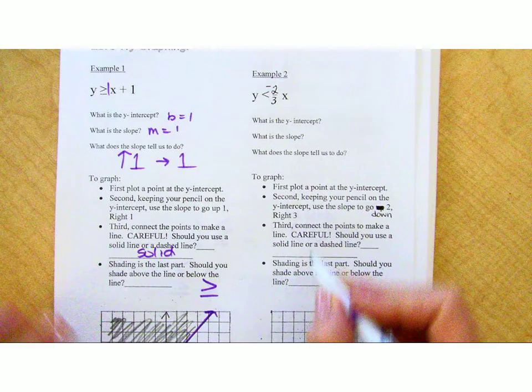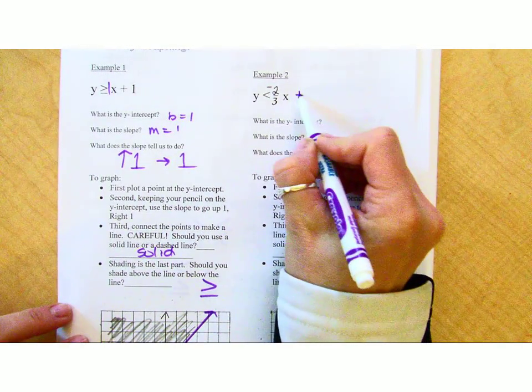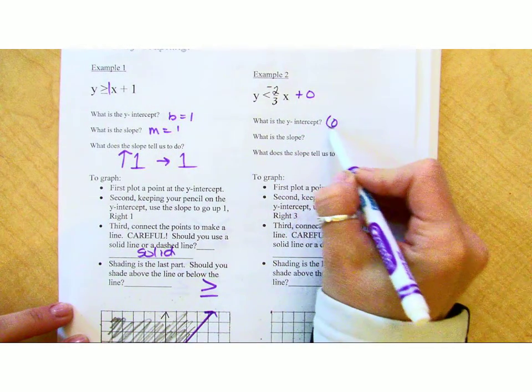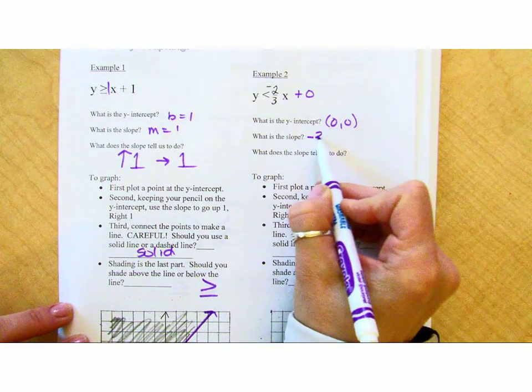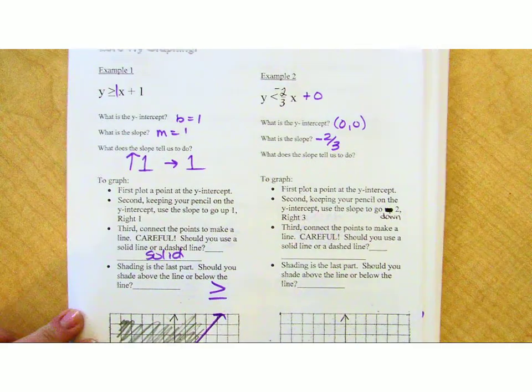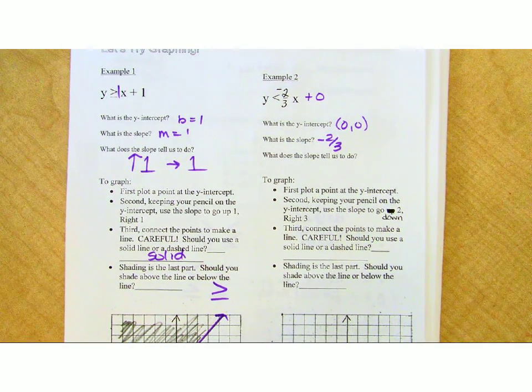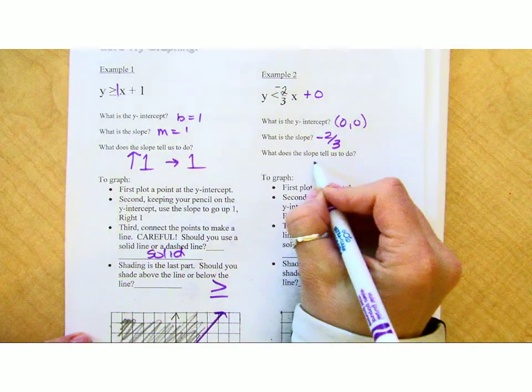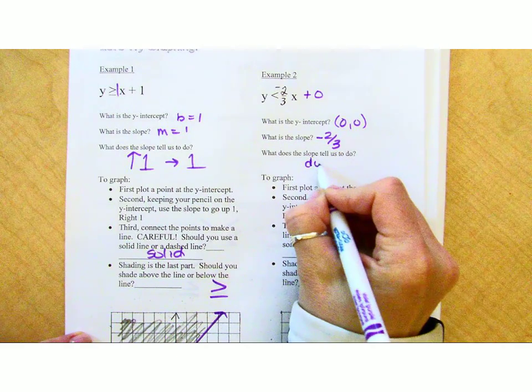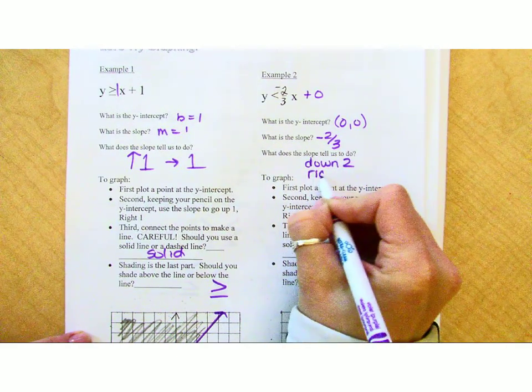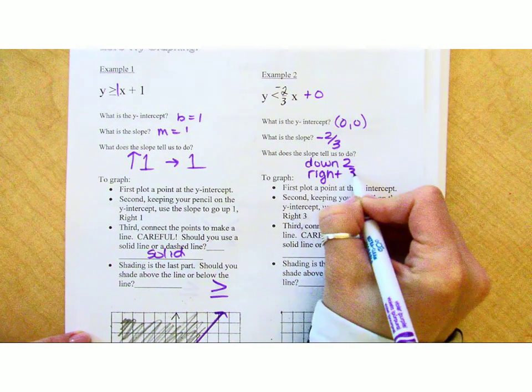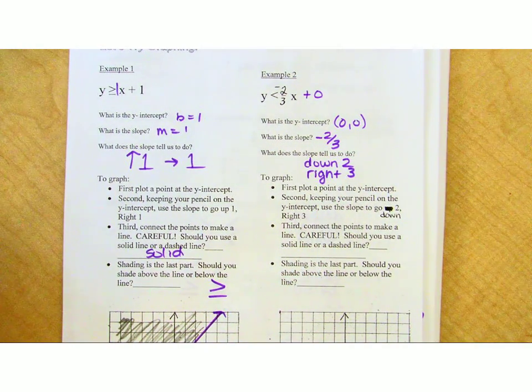What's the y-intercept in this equation right here? Zero. So I'm going to start at the origin, right? The slope of this line is what? Negative two-thirds, and that negative two-thirds, be careful, tells us to do what? You're going to rise down two and run right three from your zero-zero.